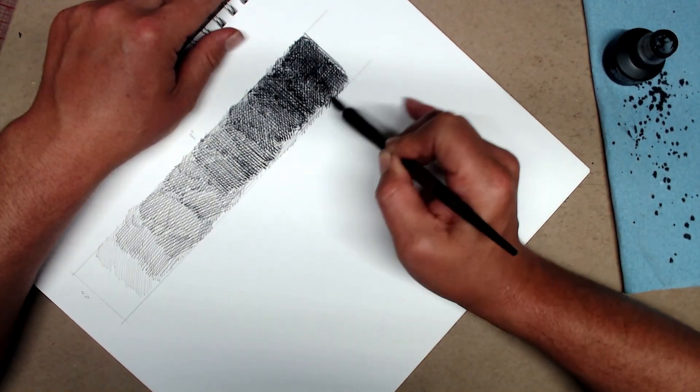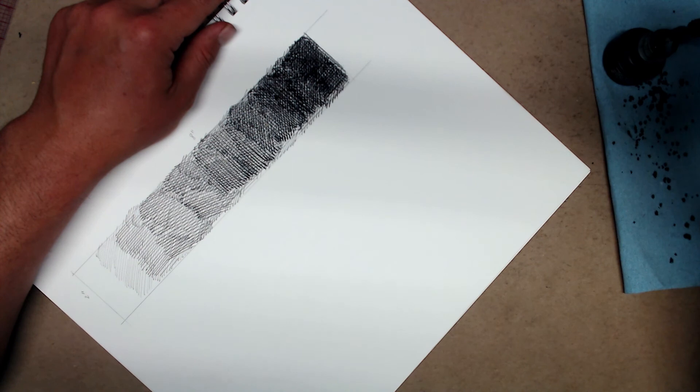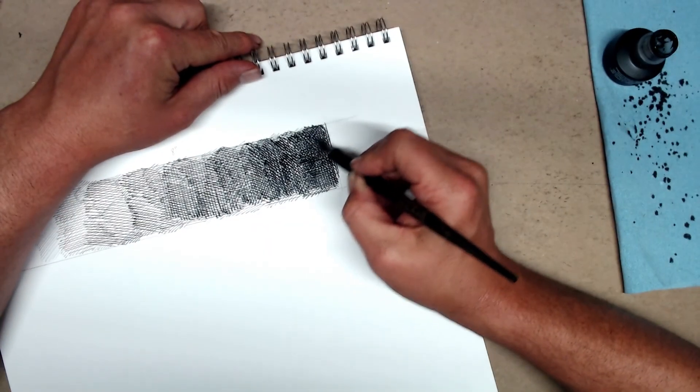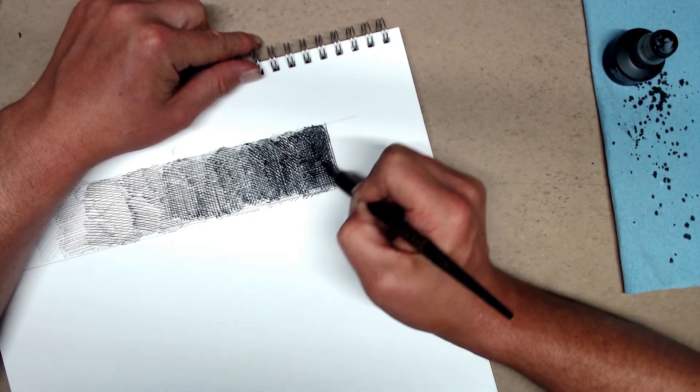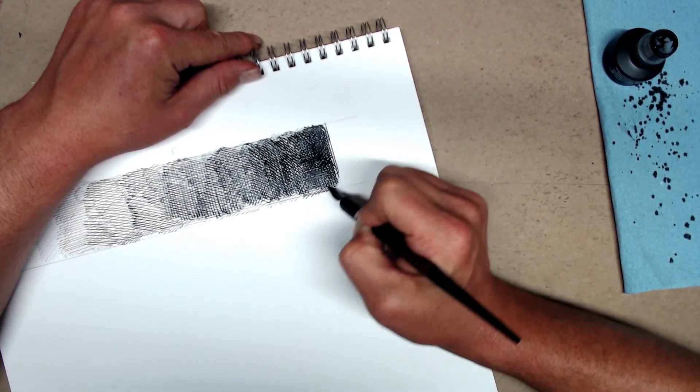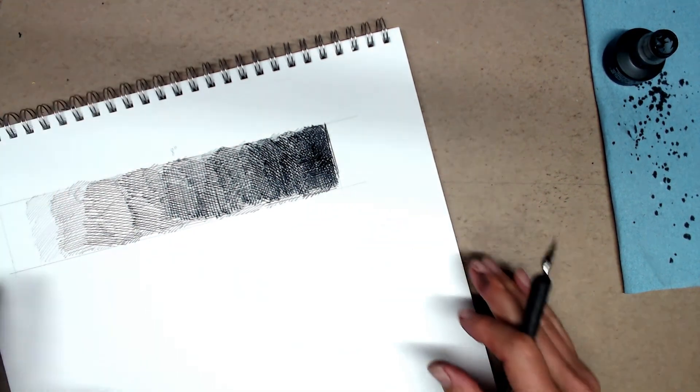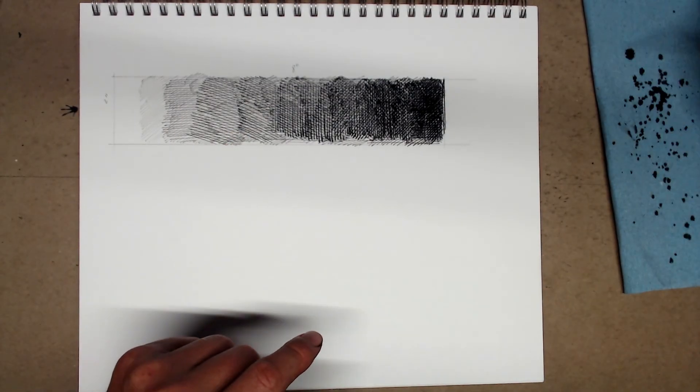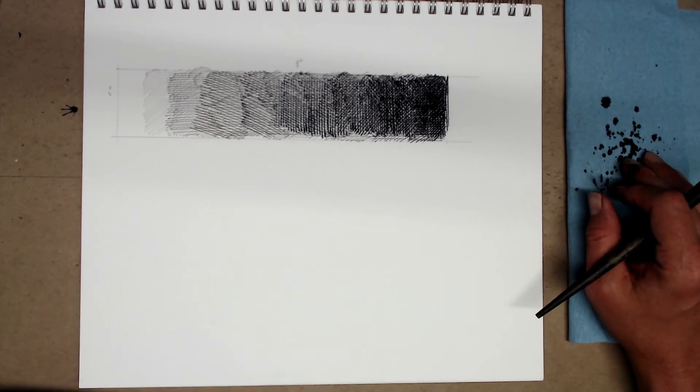When things get built up like this, make sure that you allow the ink to dry in between layers, because wet paper tears very easily. And these pens are somewhat pointy. On wet paper, there's a risk of tearing. Okay. So, there is your somewhat rough value scale. There's a few places where it's a little bit uneven. But there's your value scale.